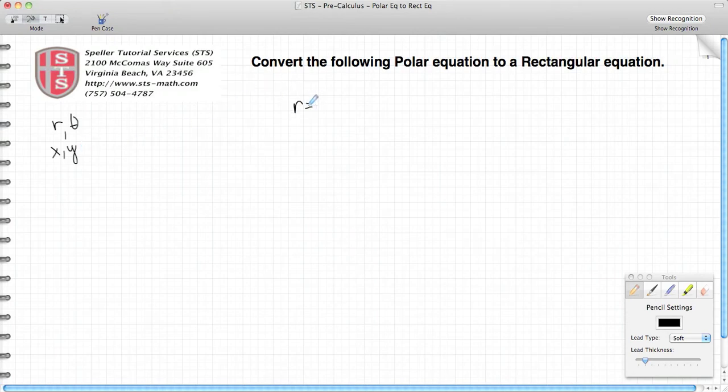Let's say we start off with r equals 6 cosine theta plus 4 sine theta.